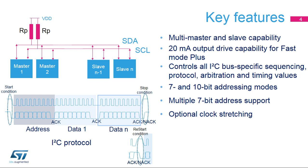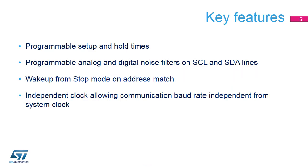The peripheral controls all I2C bus-specific sequencing, protocol, arbitration, and timing values. 7- and 10-bit addressing modes are supported, and multiple 7-bit addresses can be supported in the same application. The peripheral in master mode supports slave clock stretching, and in slave mode configuration, clock stretching can be disabled by software. The setup and hold times are programmable by software, and analog and digital glitch filters on the data and clock lines can be configured by software.